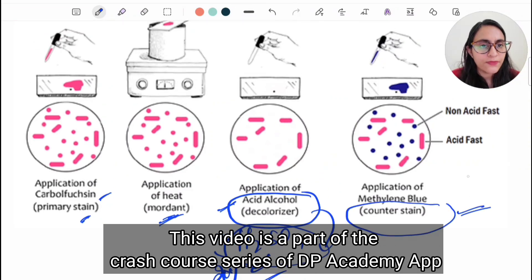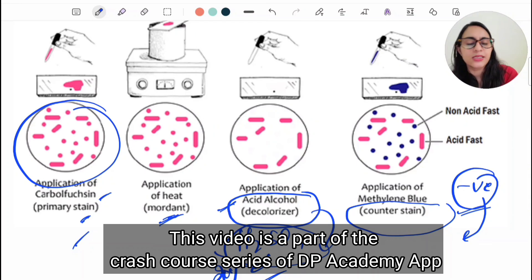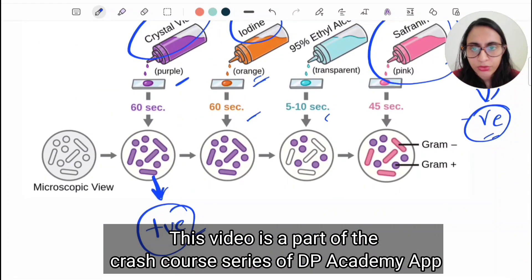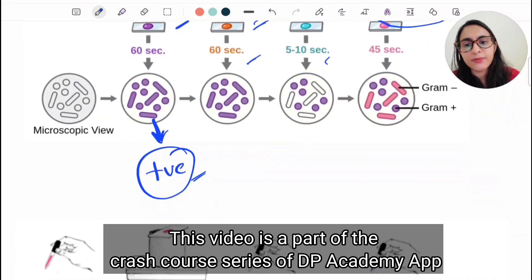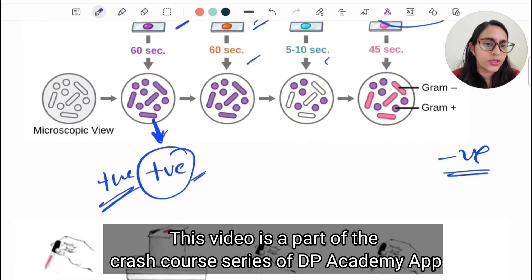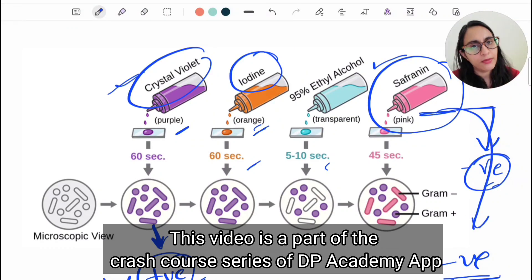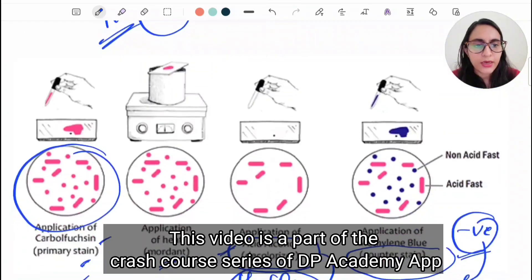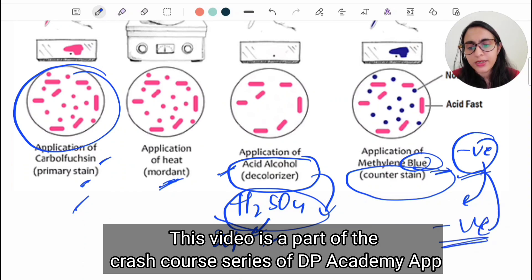Then you use a counter stain which is methylene blue. Non-acid fast organisms — the negative ones — take up this counter stain, and all the positive ones take up the primary stain. This same principle is applicable for gram staining: the primary stain is crystal violet, so the positive one takes up the primary stain and the negative one takes up the counter stain. The counter stain for gram negative is saffranin, which is a pink or red color stain.